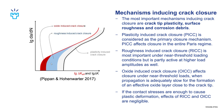Oxide induced crack closure is basically only a near-threshold phenomenon and only occurs when propagation is slow enough for an effective oxide layer to form near the crack tip. If the contact stresses are enough to cause plastic deformation, then effects of RICC and OICC will become negligible — locally a stress ratio of minus one will form and the compression will reduce the effects of RICC and OICC. Essentially what these mechanisms do is shift the effective stress intensity factor range to be lower, which is beneficial for fatigue life.